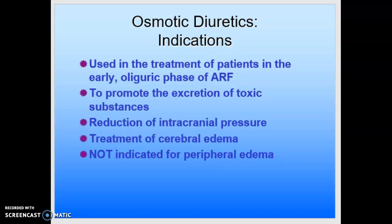The osmotic diuretics are used in the treatment of patients in the early oliguric stages of acute renal failure, or to promote the excretion of toxic substances. They can also be used in the reduction of intracranial pressure or the treatment of cerebral edema. However, osmotic diuretics are not indicated for peripheral edema — they're not used in peripheral edematous states or in outpatients because they have the potential to induce intravascular volume expansion and pulmonary edema in some patients.